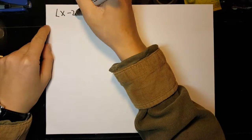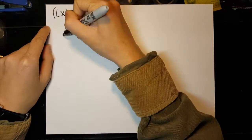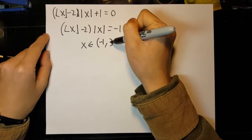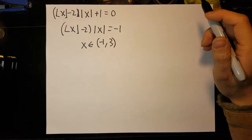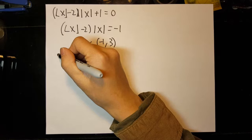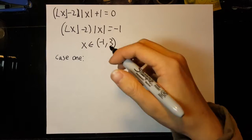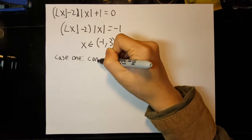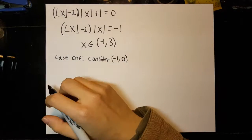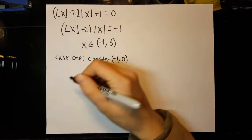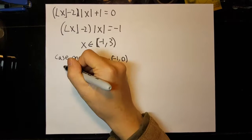Subtracting one from both sides, we obtain the floor of x minus two times the absolute value of x equals one. If x equals three or more, the equation will not be possible because the floor of x minus two and the absolute value of x will both be positive. Since their product must equal negative one, x cannot be equal to or greater than three. Also, if x is less than negative one, the magnitude of both the floor of x minus two and the absolute value of x will be greater than one. Thus, the range for x is between negative one and three.